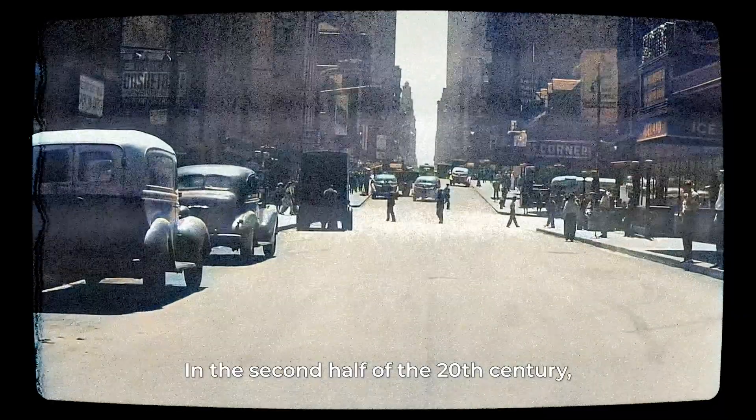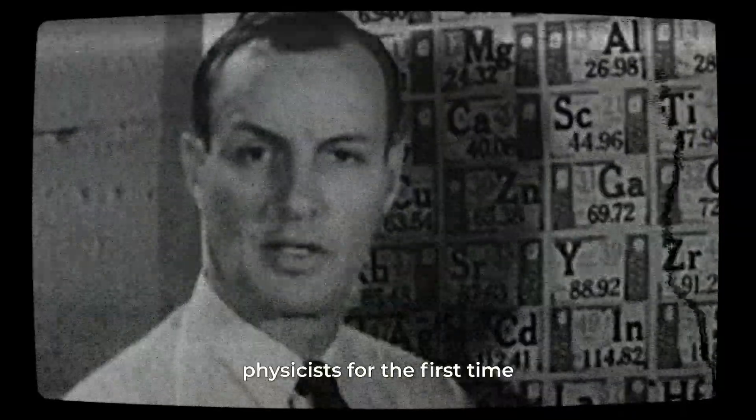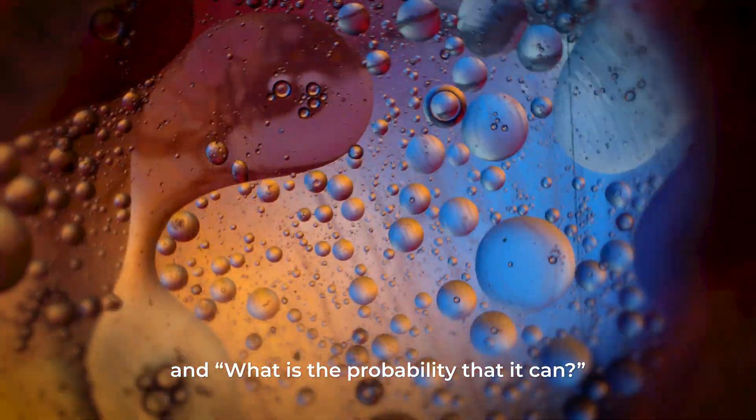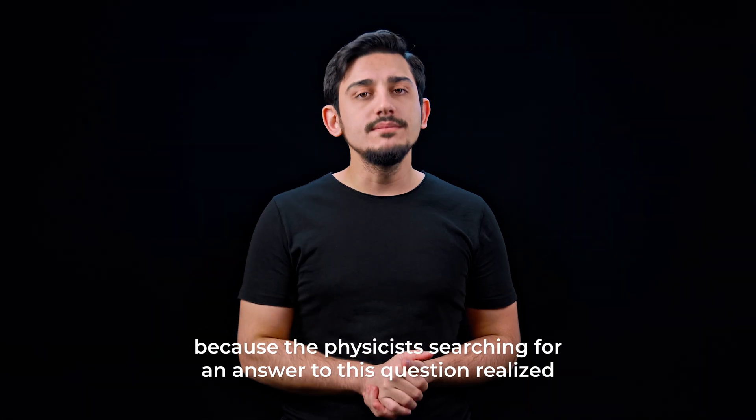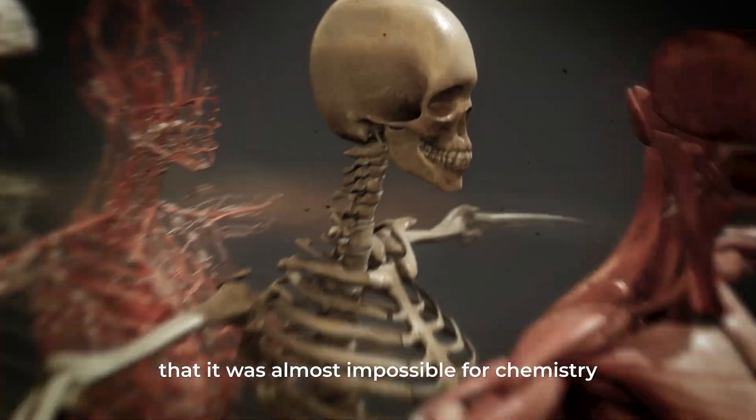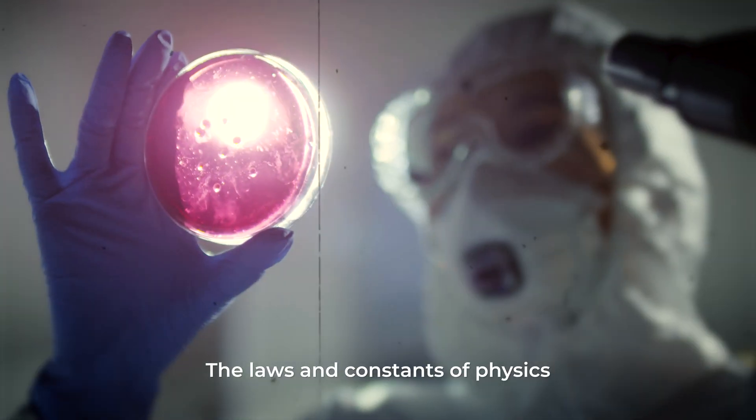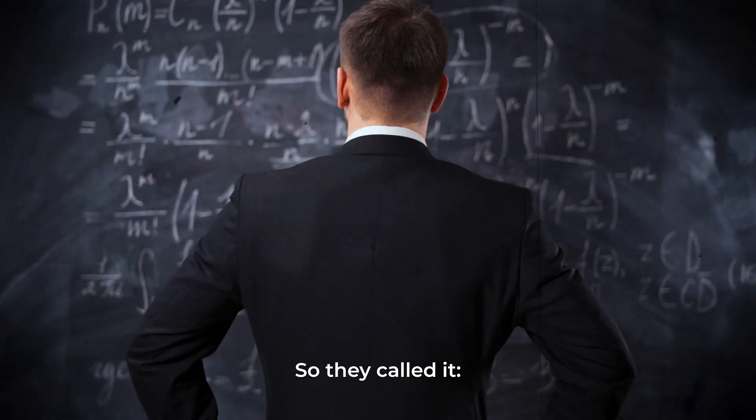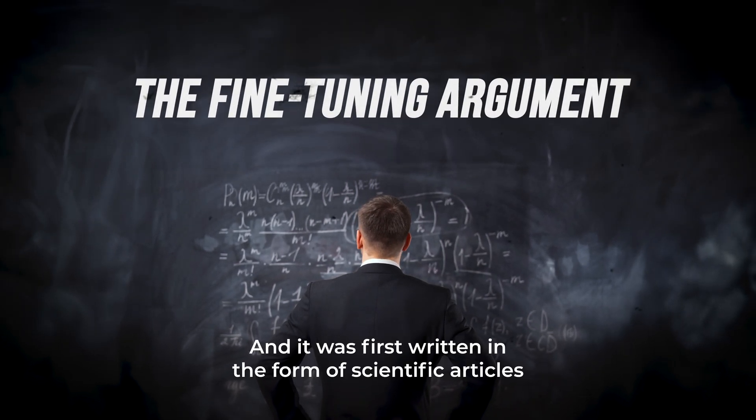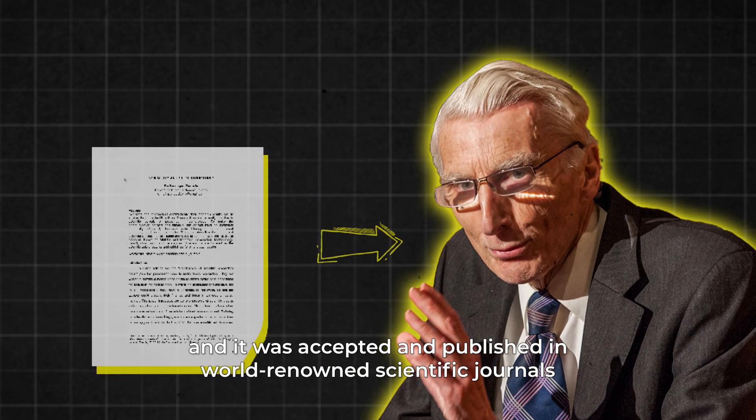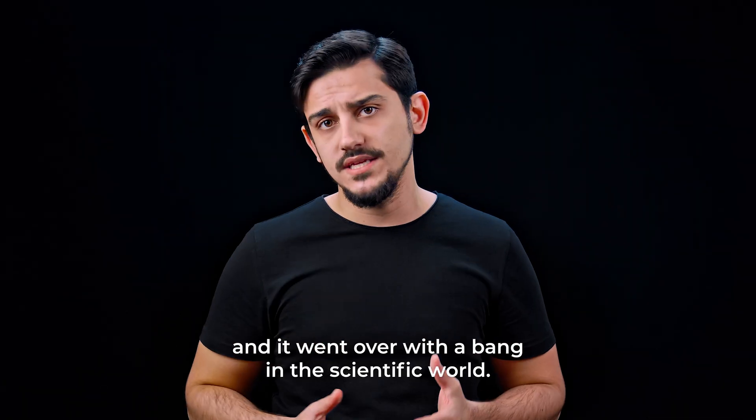But the first thing that surprised us was this. In the second half of the 20th century, in the 1970s, physicists for the first time began to ask the question, can chemistry explain the complex systems found in life and what is the probability that it can? This research was significant because the physicists searching for an answer to this question realized that it was almost impossible for chemistry to explain such complex systems. The laws and constants of physics were almost in an extremely fine-tuned equilibrium. So they called it the fine-tuning argument. And it was first written in the form of scientific articles by Martin Rees, one of the most famous astrophysicists in the United Kingdom. And it was accepted and published in world-renowned scientific journals such as Nature, and it went over with a bang in the scientific world.